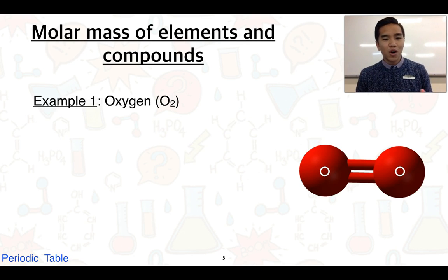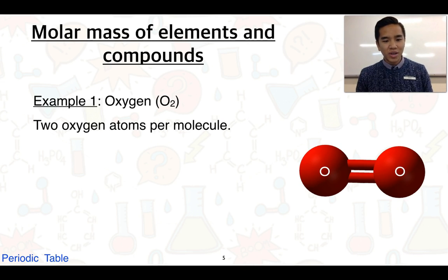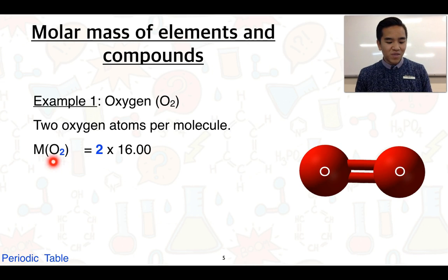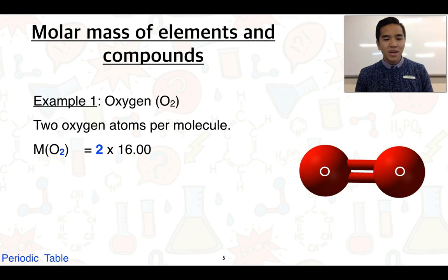If we just go through an example — we've got oxygen here. We know that oxygen molecules are made up of two oxygen atoms, so we write the chemical formula as O₂. We often call it a diatomic molecule because it consists of just two atoms. If we want to work out its molar mass, we have to factor in that oxygen molecules are made up of two oxygen atoms. So the molar mass of oxygen equals two times the relative atomic mass of oxygen, which is 16, giving us 32.00 grams per mole.